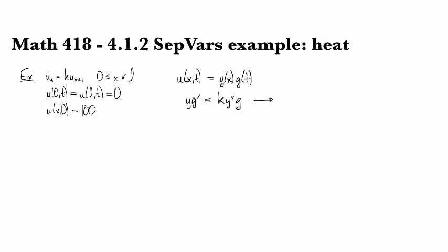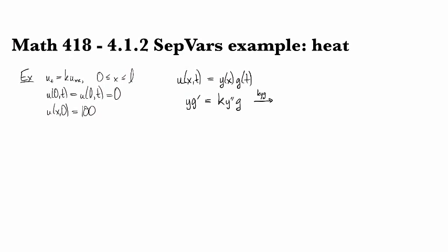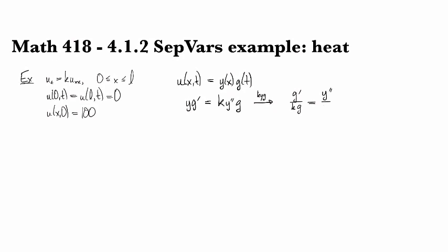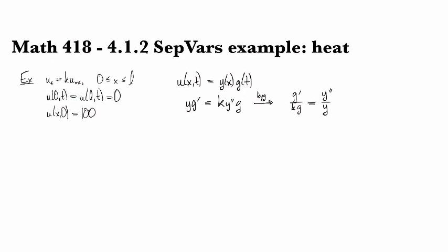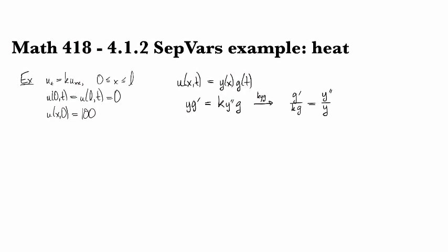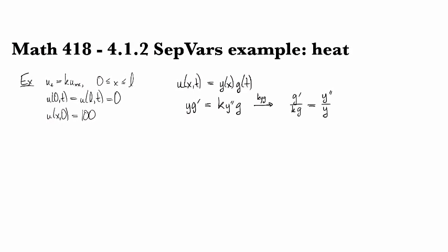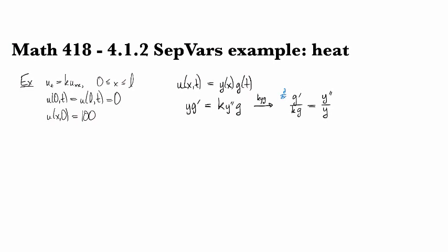And then we can divide by k y g both sides. And this becomes g prime over k g equals y double prime over y.